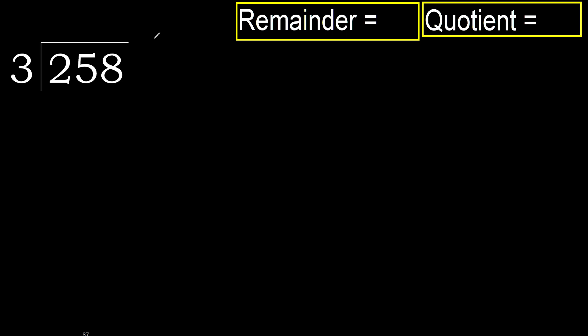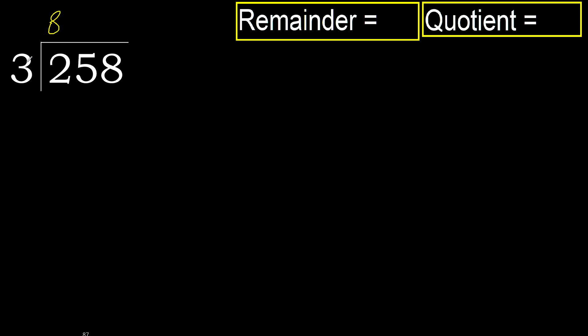258 divided by 3. 2 is less, therefore next, 25 is not less. With 25: 3 multiplied by which number is nearest to 25 but not greater? 3 multiplied by 9 is 27, 27 is greater. 3 multiplied by 8 is 24. 24 is not greater.